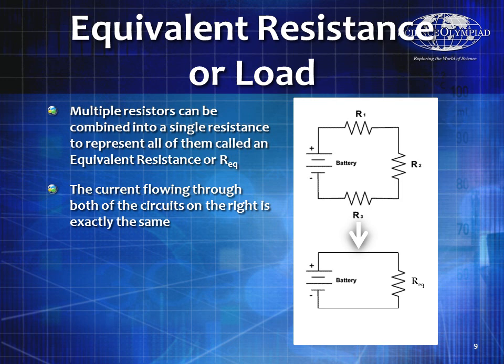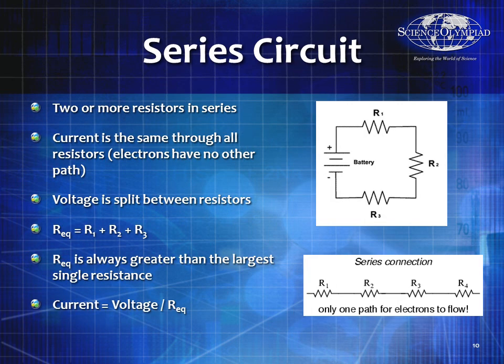In a series circuit, the current flowing through is exactly the same. R equivalent equals R1 plus R2 plus R3, so the current flowing out of the positive terminal clockwise is equal throughout. A series circuit is two or more resistors in line with each other — the current is the same throughout. Like marbles, electrons have to go somewhere: if I've got one amp coming in, I have one amp going through each resistor and one amp going back in.